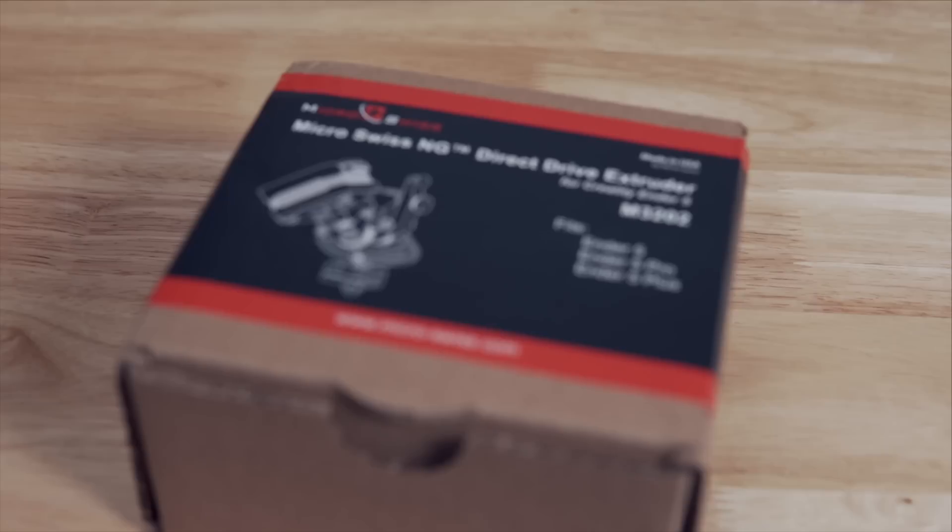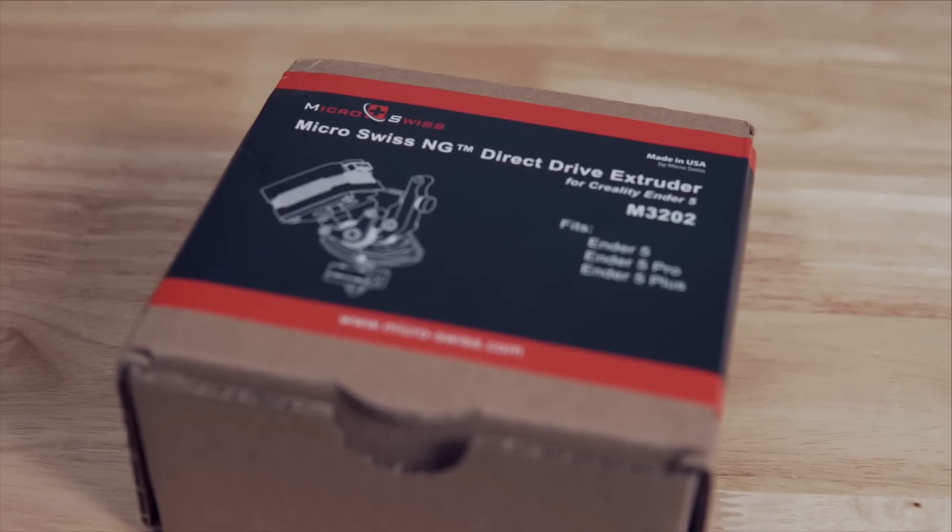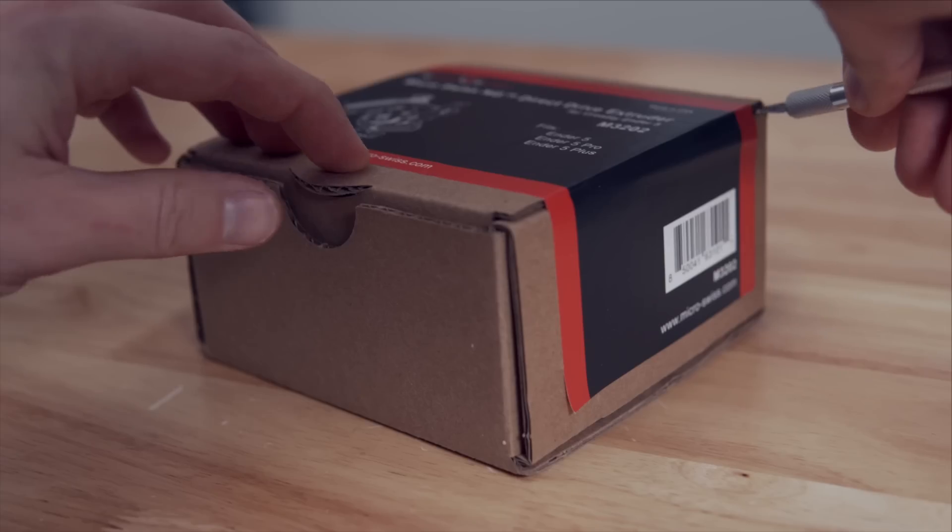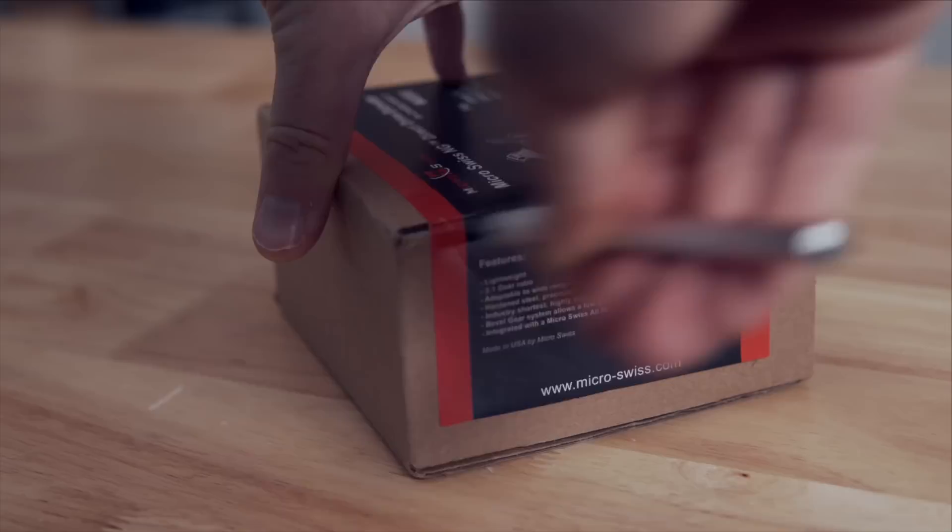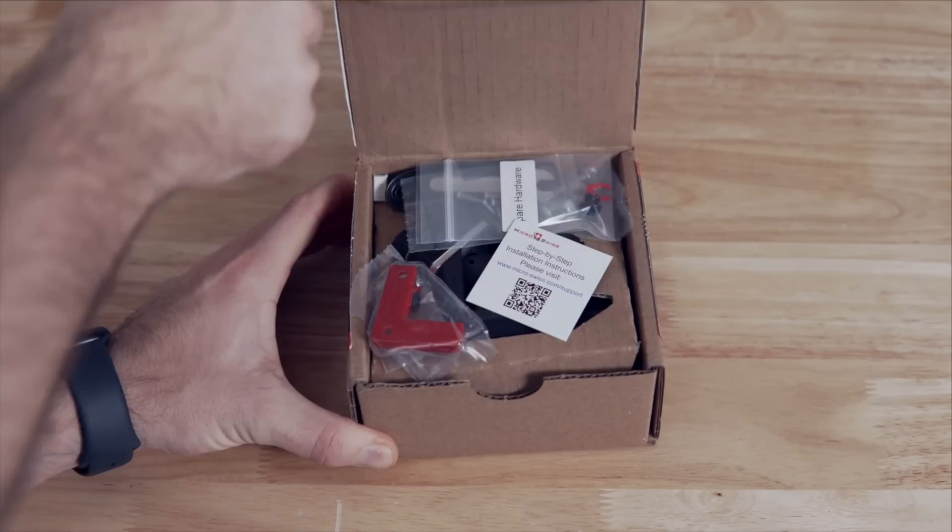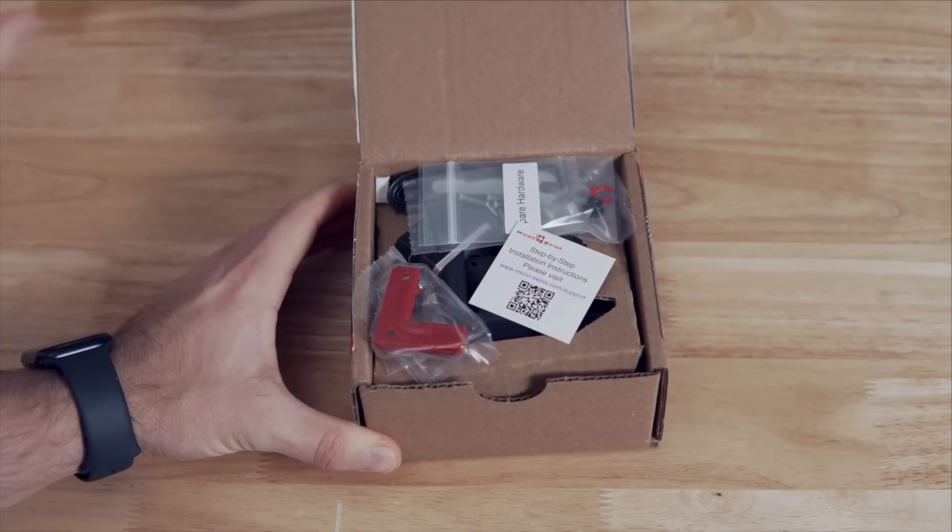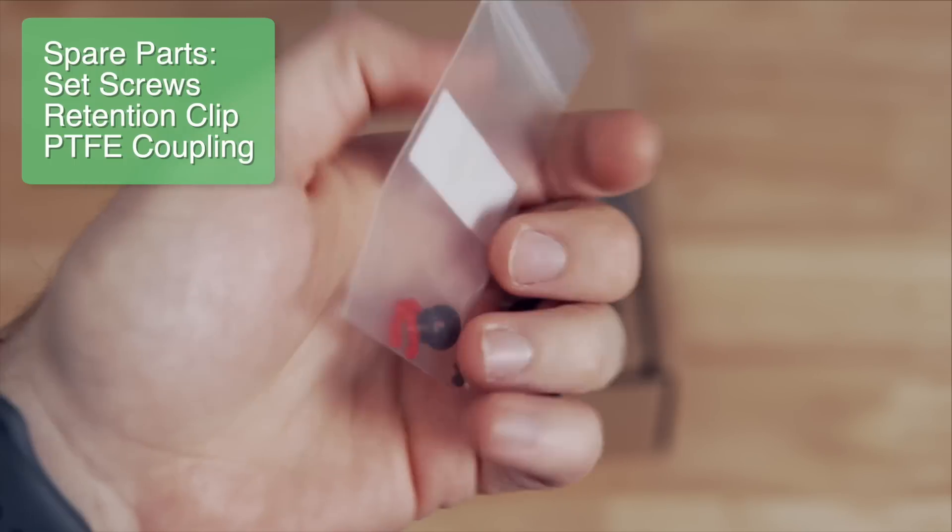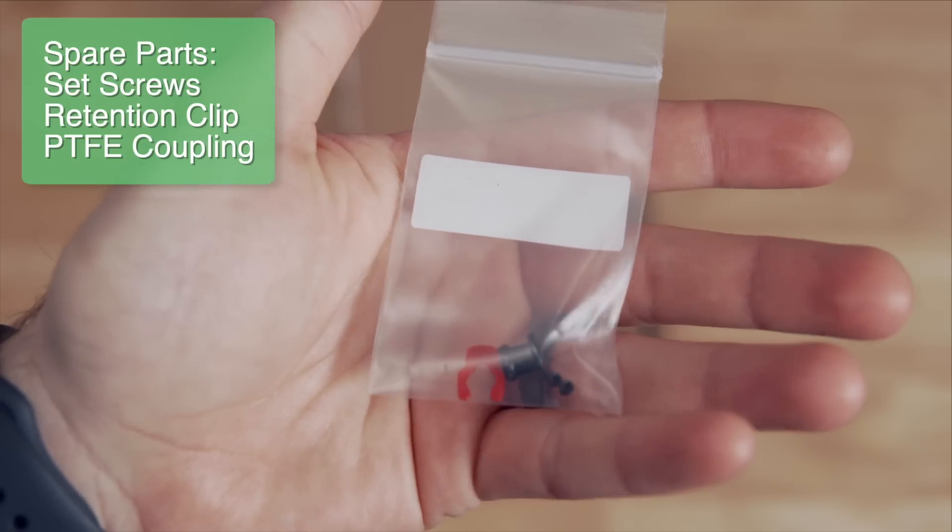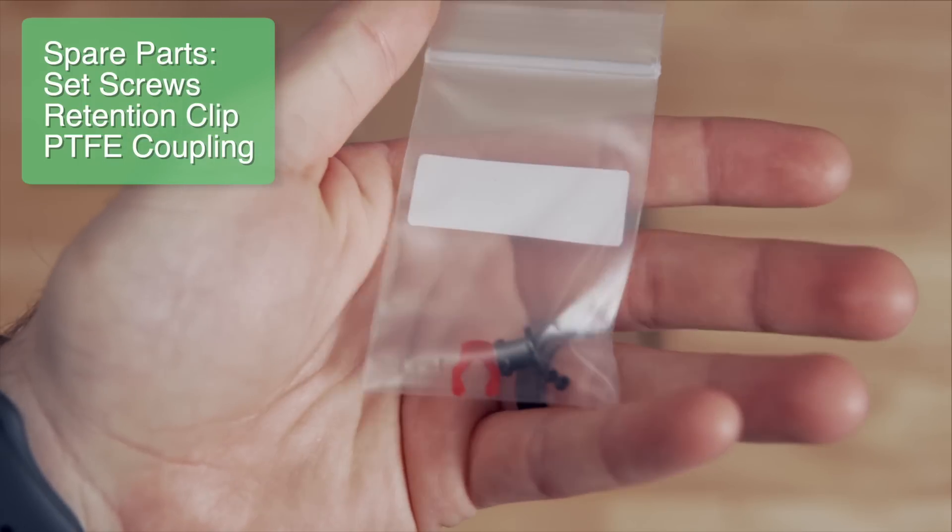Before I do any mod or install, the first thing I like to do is take out all of the parts included to get a little bit of familiarity as well as sort of do a head count and make sure that everything is there. So let's first run through what's included with this kit. In the box, we have a bag of spare parts. This just has some set screws, a retention clip, and PTFE coupling.